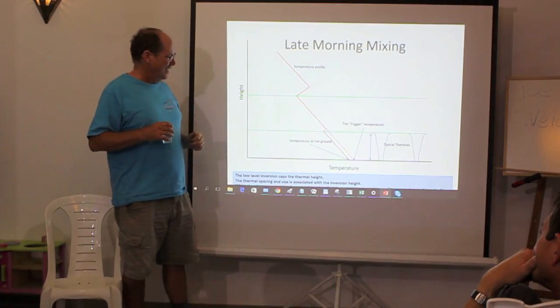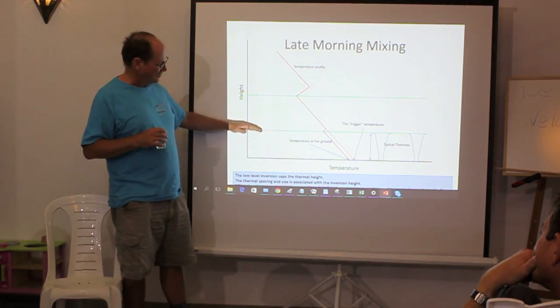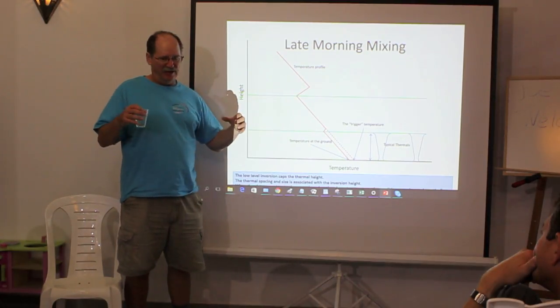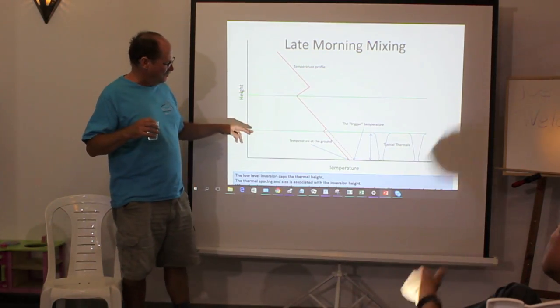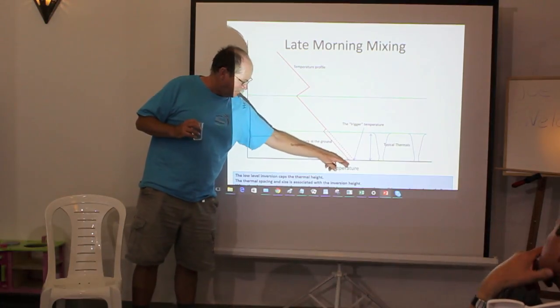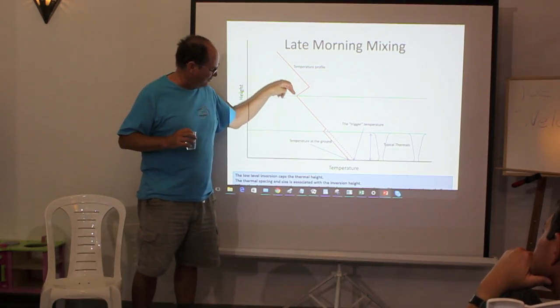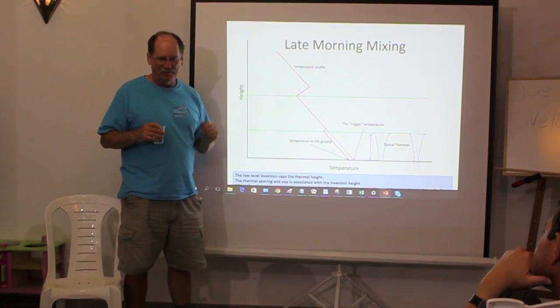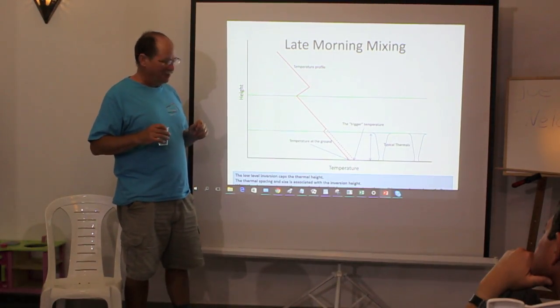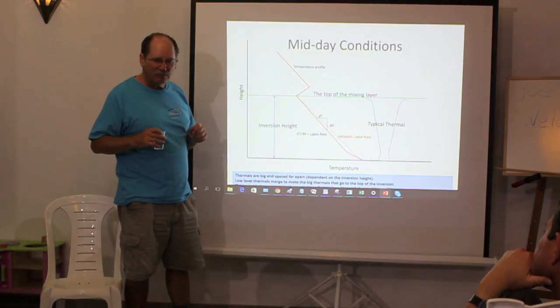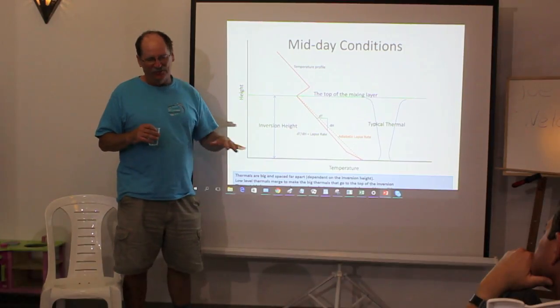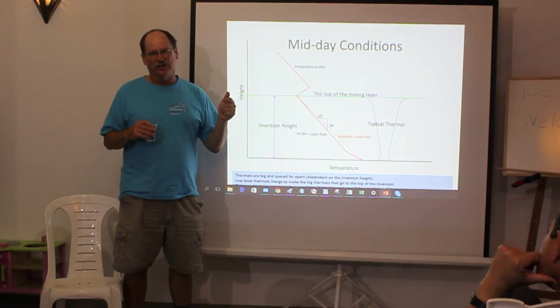And then as the day starts warming up, the thermals get higher, they start spreading out. And then at some point, the ground temperature gets warming up to where this low-level morning inversion breaks down. And then there you go. At that point where the morning, the low-level inversion breaks, rules change.